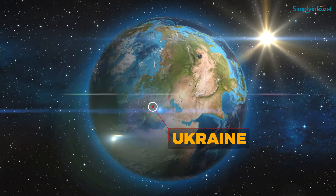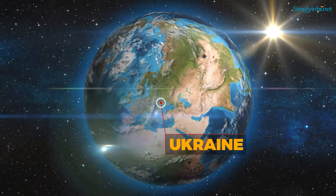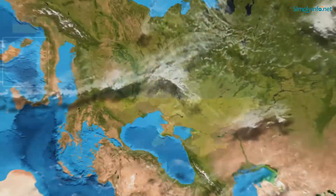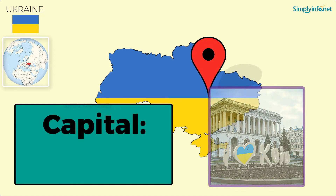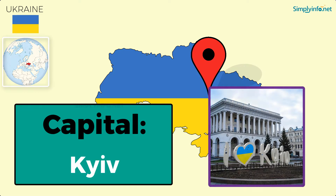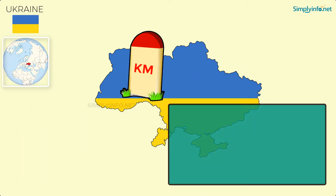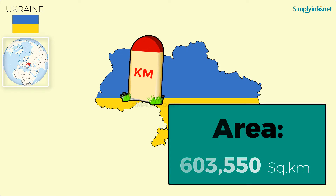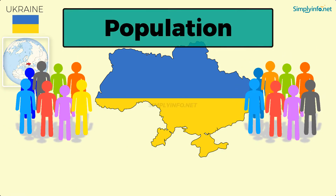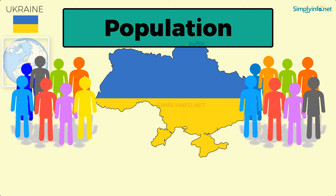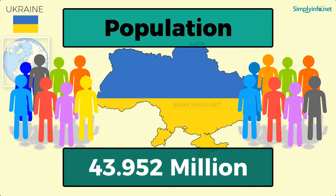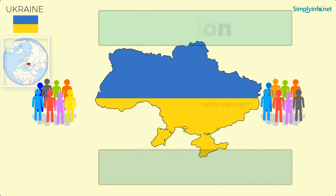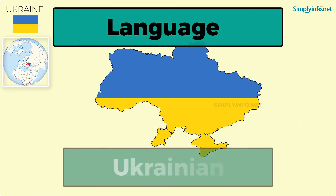Name: Ukraine. Capital: Kyiv. Area: 603,550 square kilometers. Population as of 2018: 43.952 million. Language: Ukrainian.